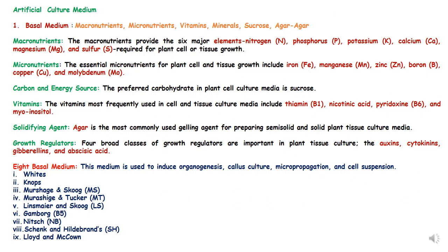The culture medium for endosperm consists of macronutrients, micronutrients, vitamins, minerals, a carbohydrate source like sucrose, and agar agar. Any of the eight basal media can be utilized — White, Snops, MS, MT, LS, B5, NB, SHN, or Lloyd — and this has to be standardized. Based on that, the basal medium can be supplemented with growth regulators.